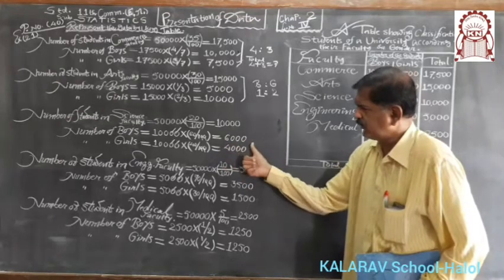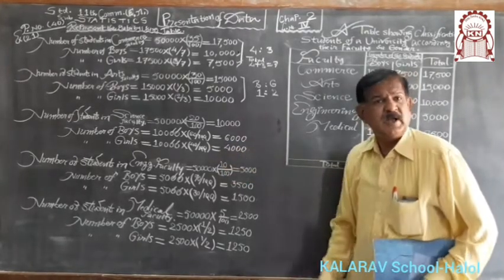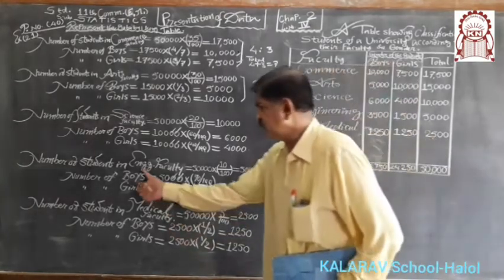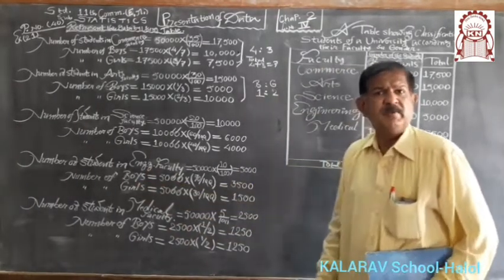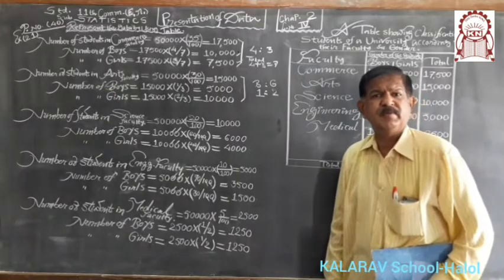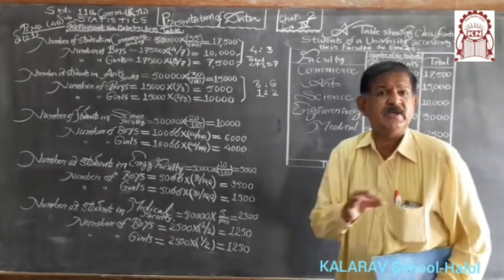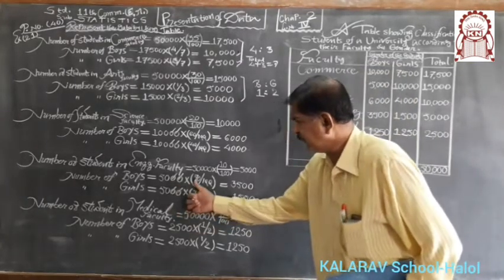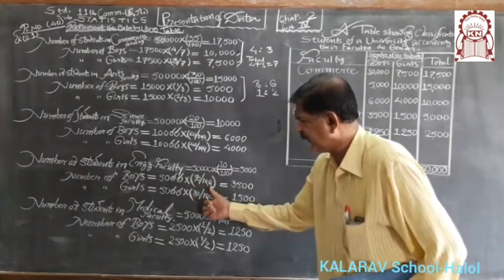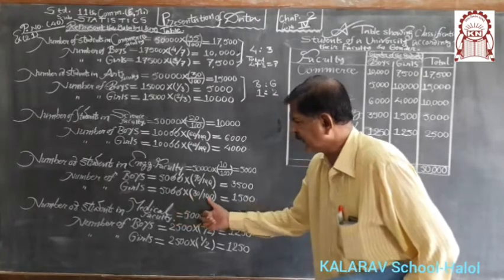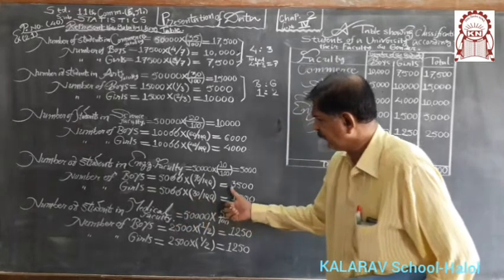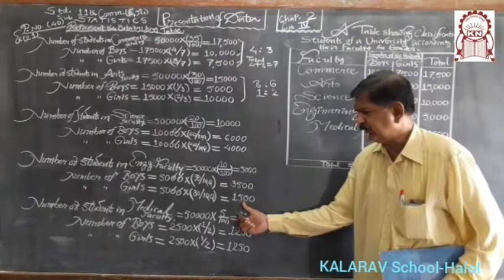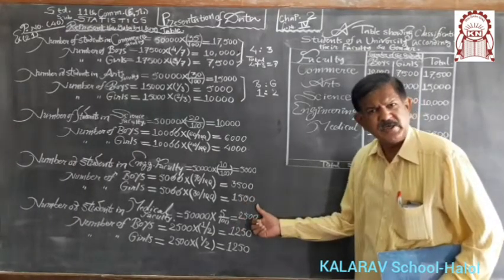In engineering faculty, 70% are boys and the remaining 30% are girls. Therefore, 5,000 into 70 upon 100 gives 3,500 boys, and 5,000 into 30 upon 100 gives 1,500 girls in engineering faculty.